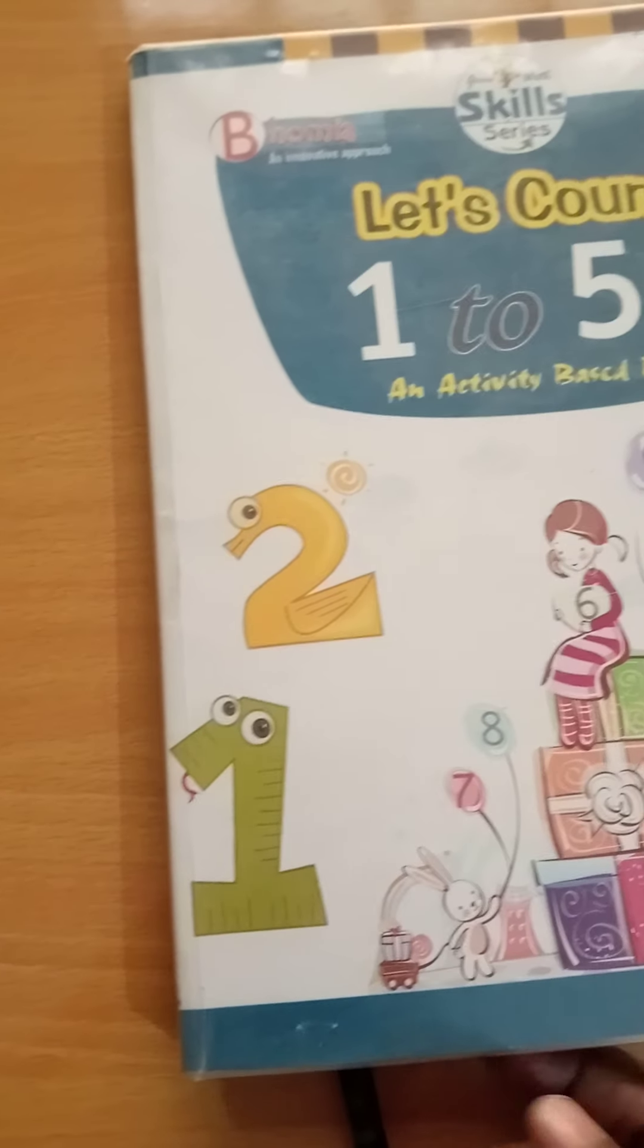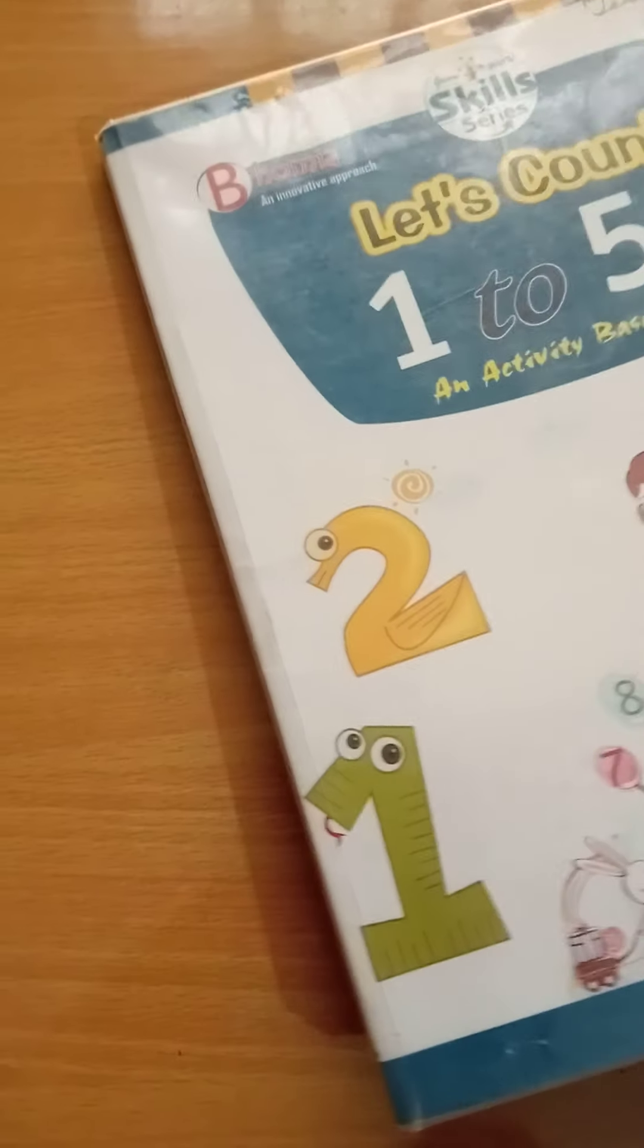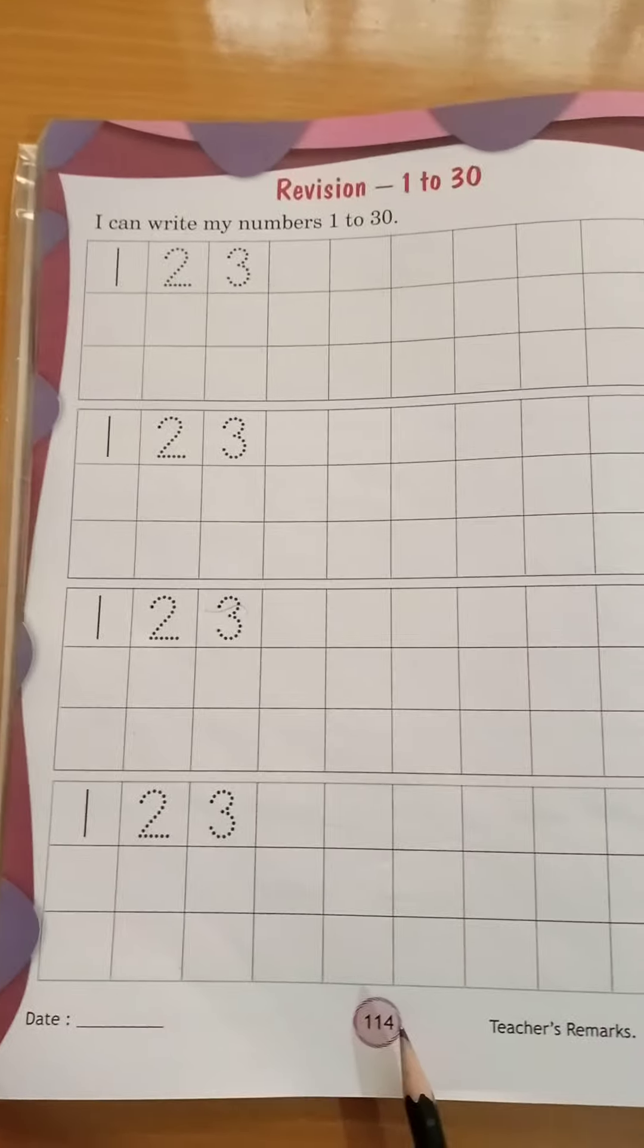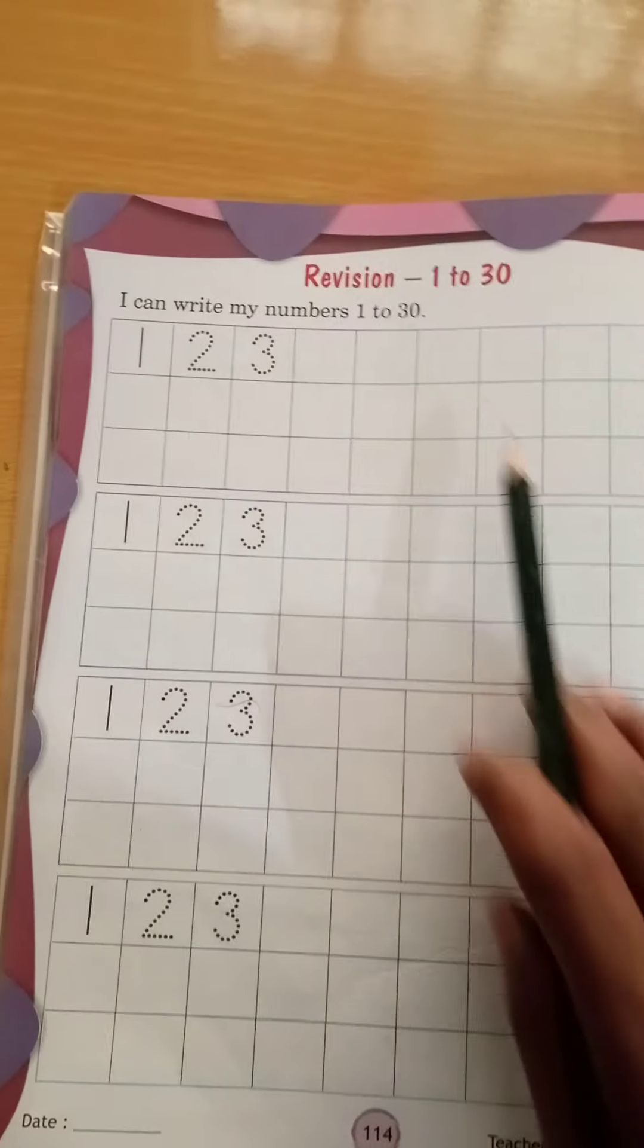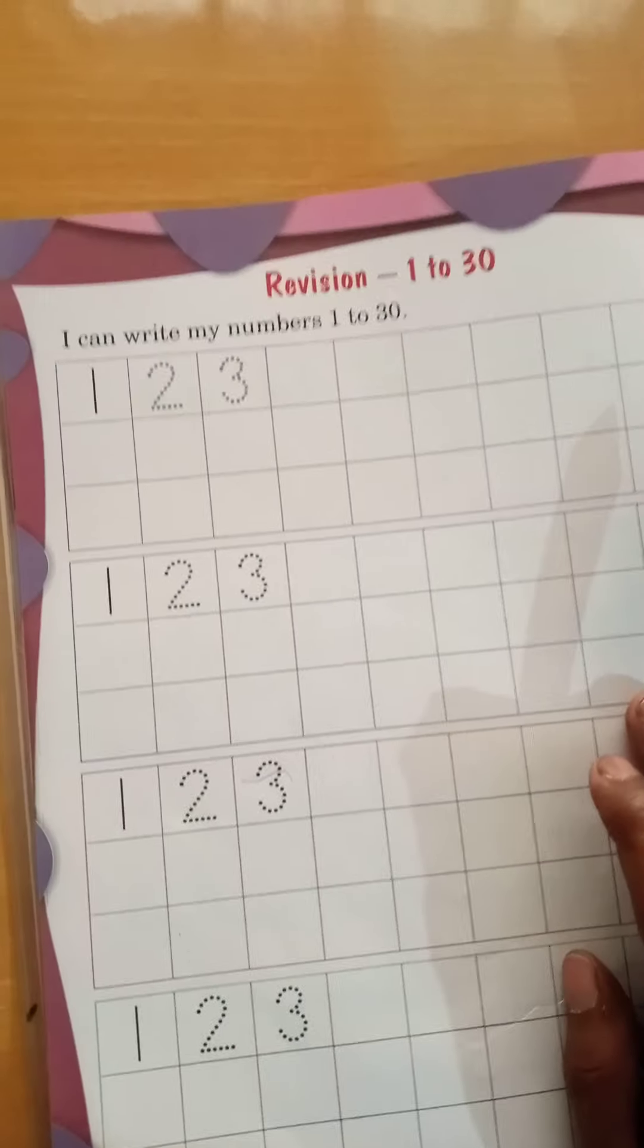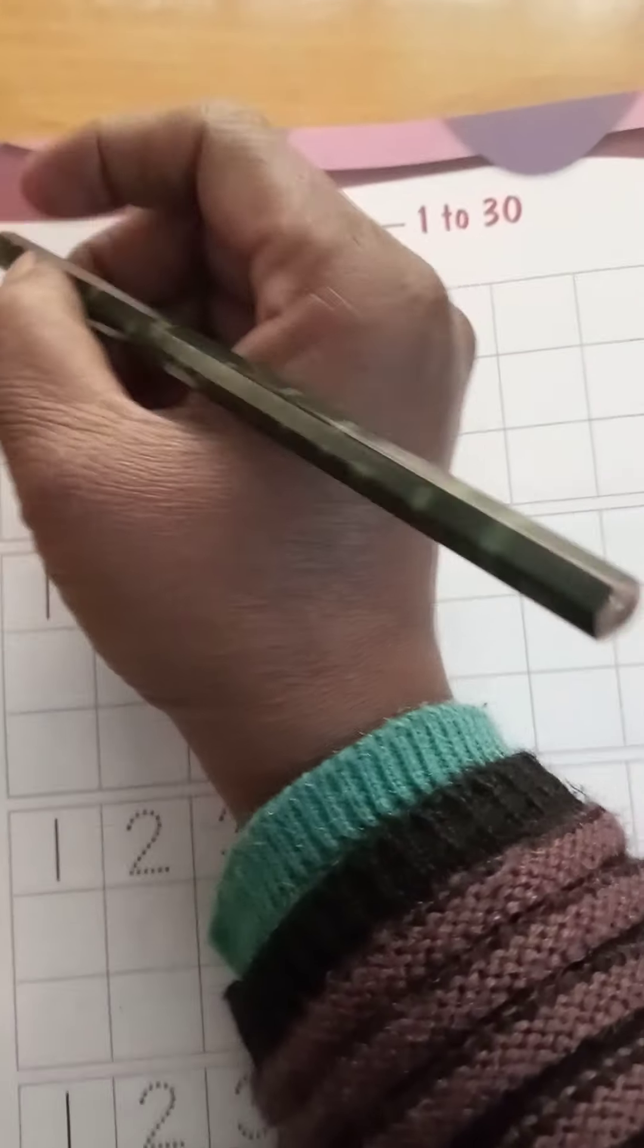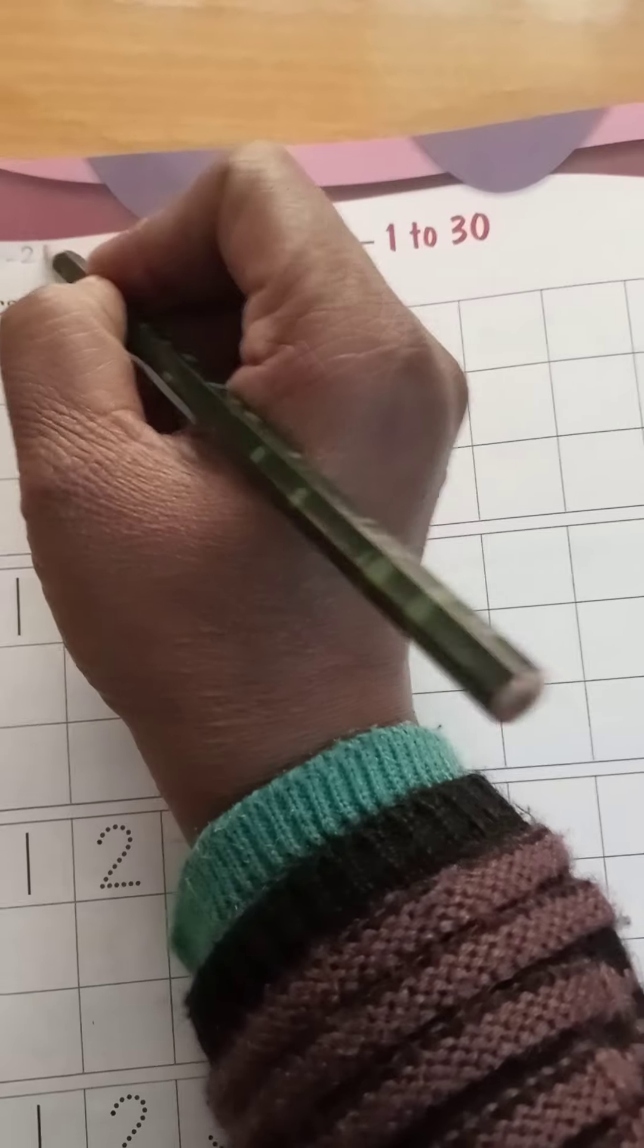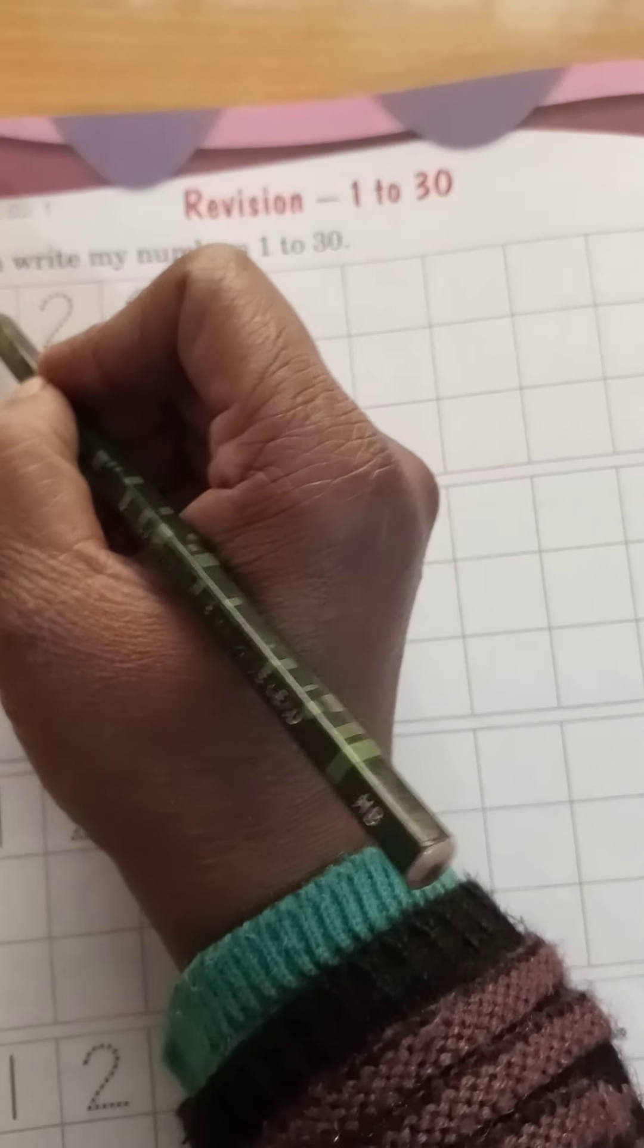Open page number 114. Here is written revision work 1 to 30 numbers. First we have to write date. Which date is today? 3 dash 12 dash 2021.